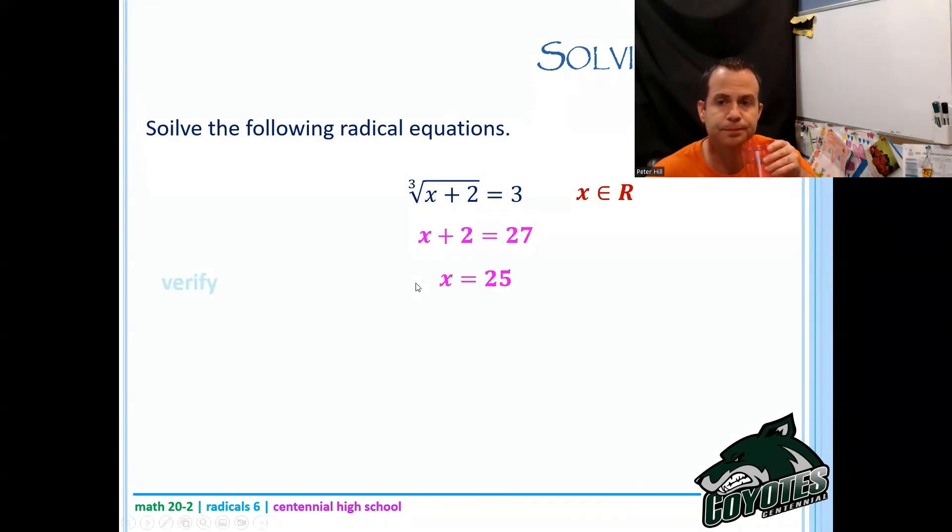So now I want to verify that. Plug 25 back in for x. 25 plus two is 27, and the cube root of 27 is, in fact, three. Everything's good. Three equals three. My answer is x equals 25.